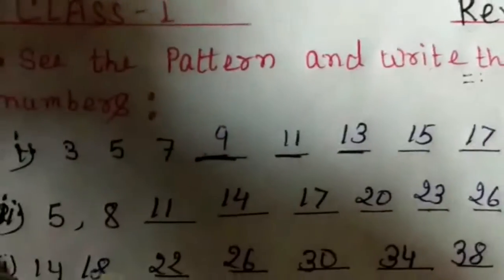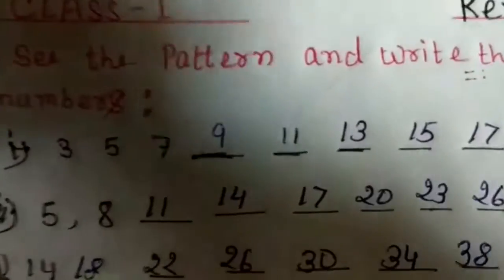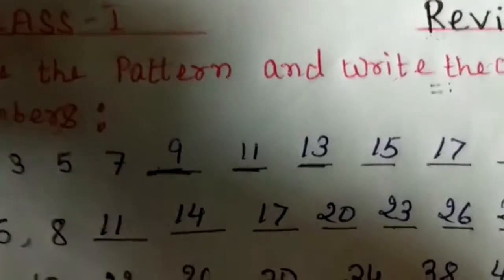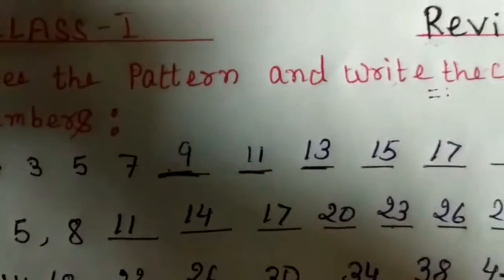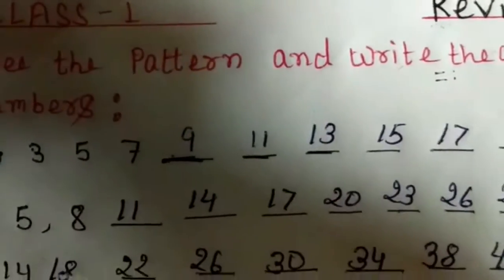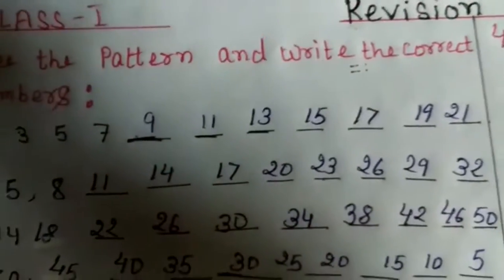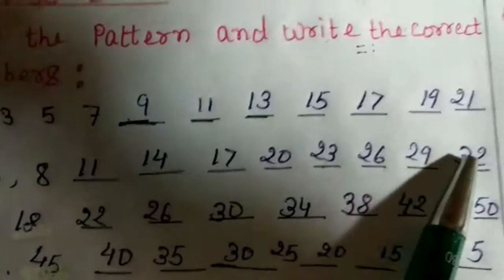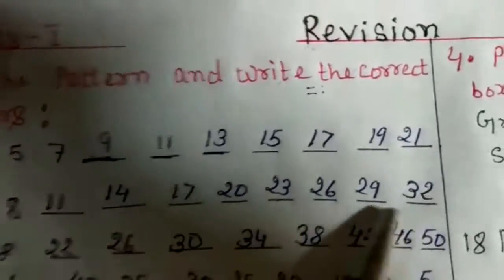Continuing: in 11, we add 3 to get 14. In 14, we add 3 to get 17. In 17, we add 3 to get 20. In 20, we add 3 to get 23. In 23, we add 3 to get 26. In 26, we add 3 to get 29. In 29, we add 3 to get 32.